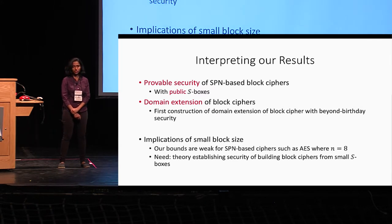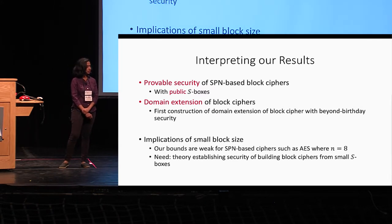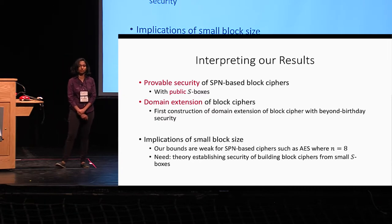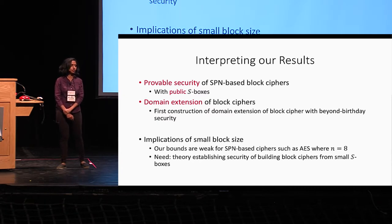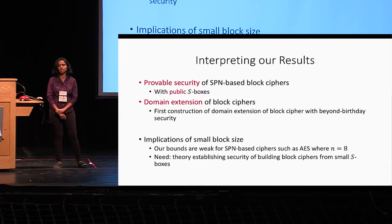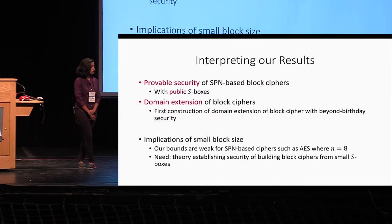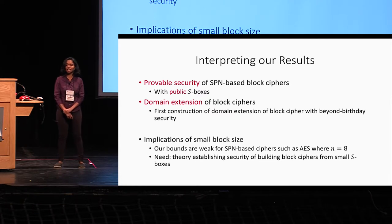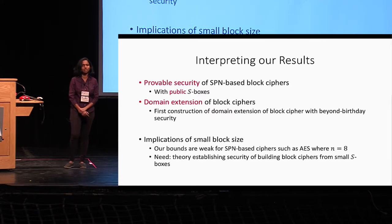A caveat of our results is that our bounds are weak for SPN-based block ciphers such as AES when the size of the S-box is small — for example, when N equals 8 — because the size of the input to the S-box acts as a security parameter in our setting. What is required is a theory that establishes the security of building block ciphers from small S-boxes.